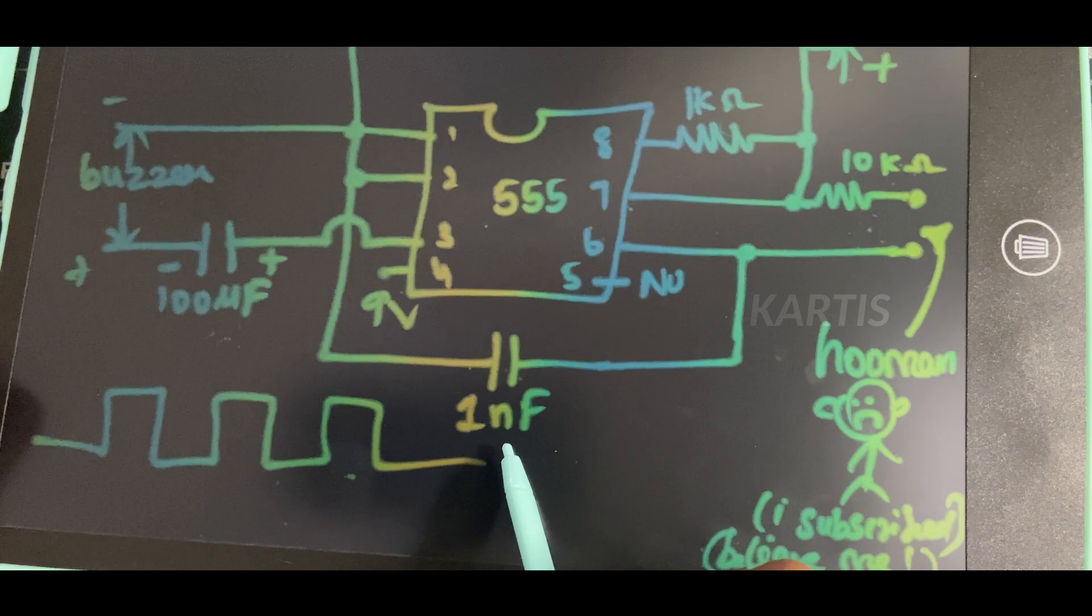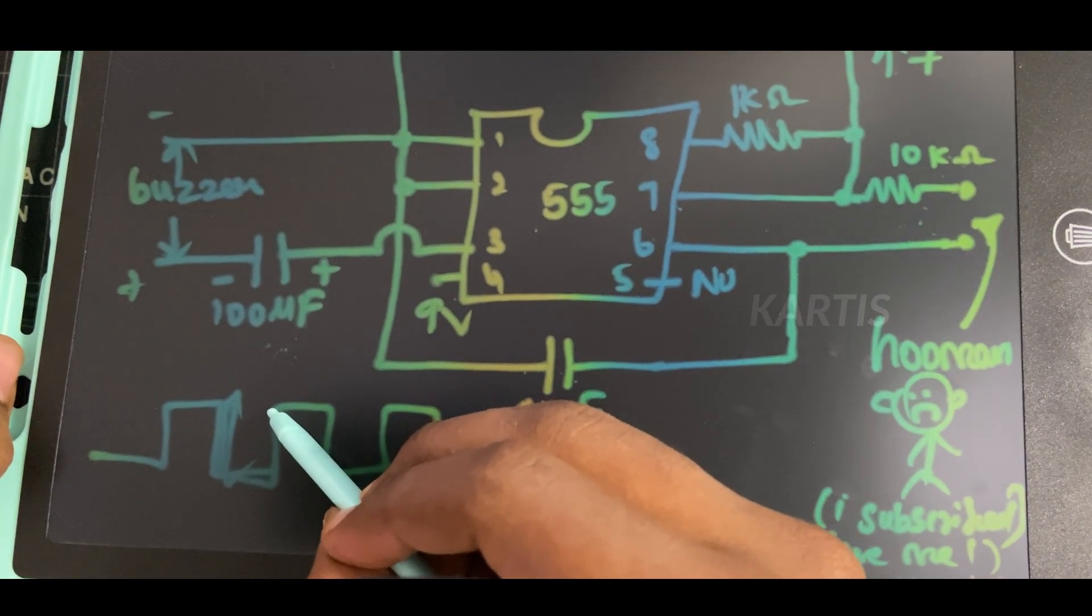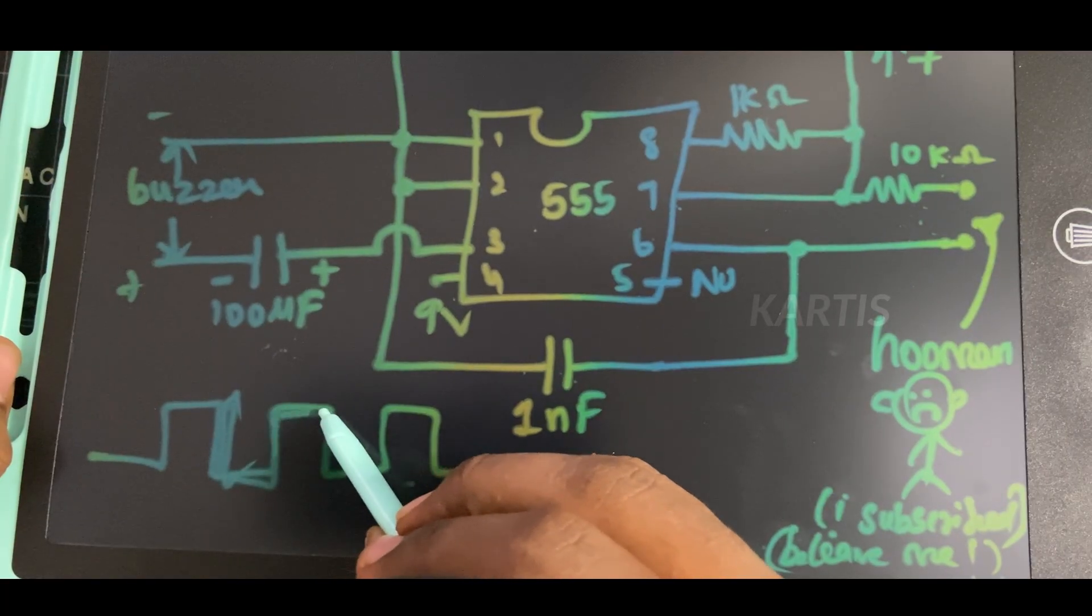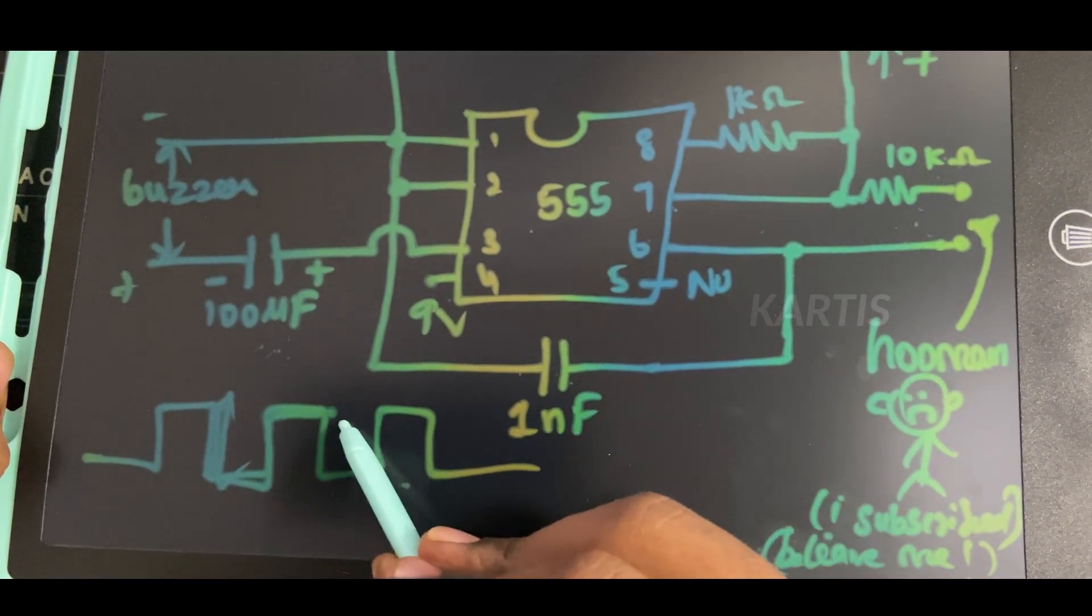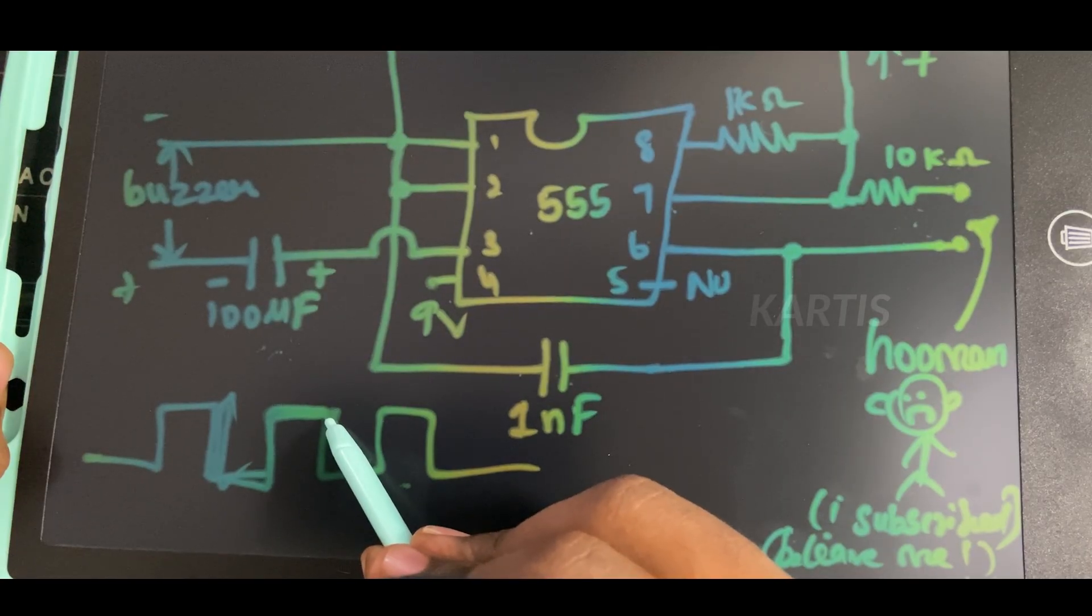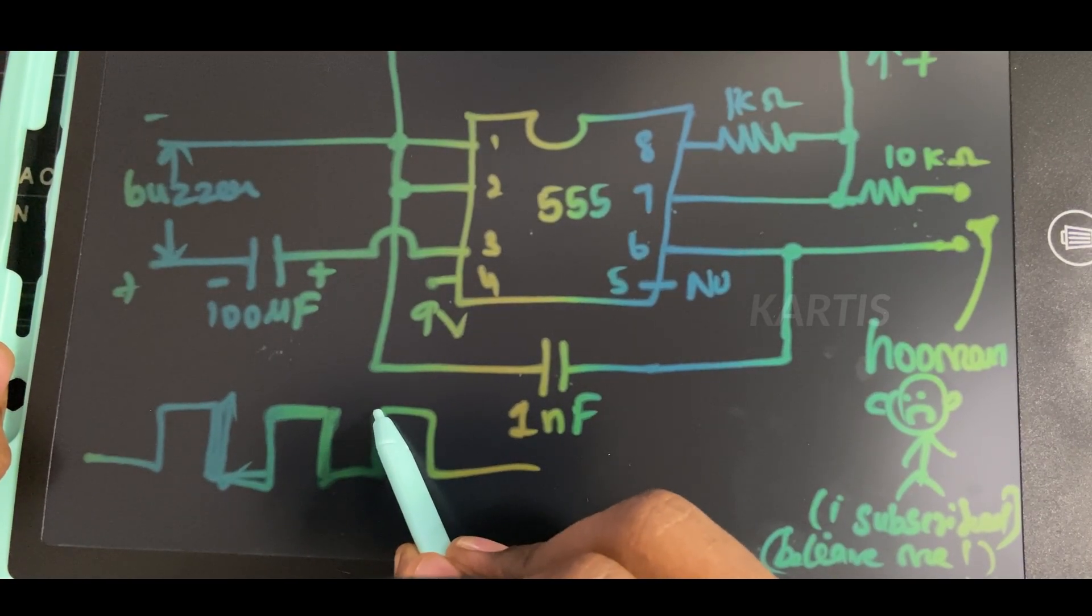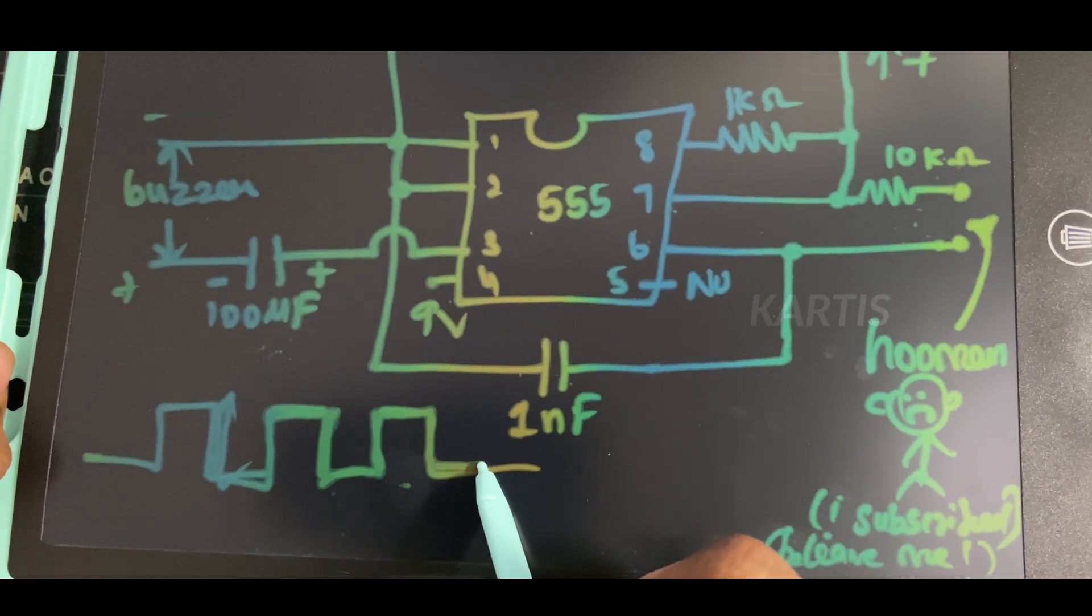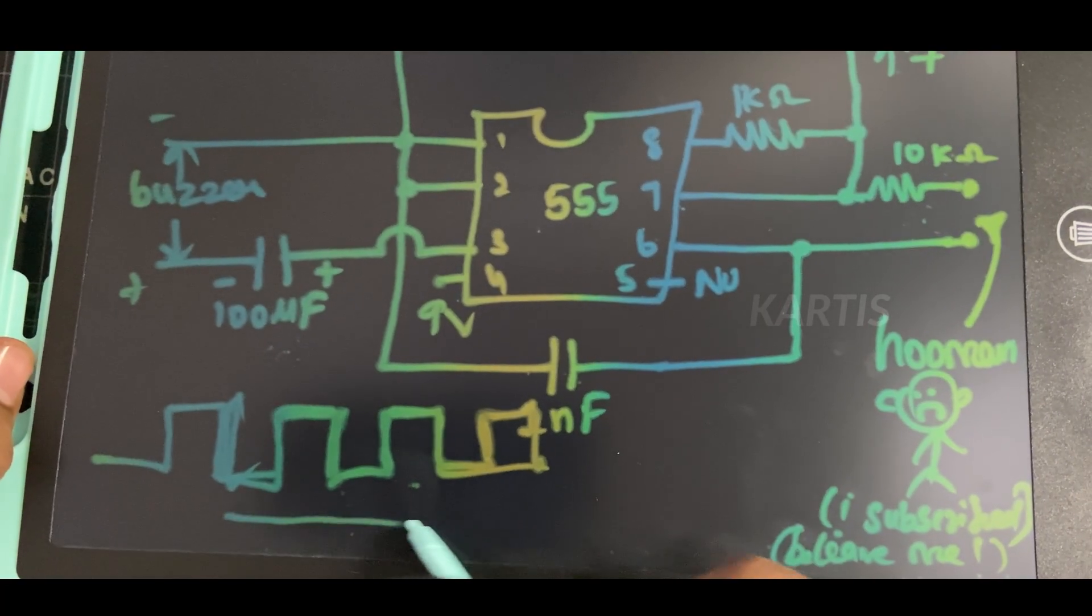If the capacitor is charged, the output will be high. Then, we go to off-state, which means no voltage. Then, we discharge it. The capacitor is charging and discharging continuously. The output alternates high and low. This continuous cycle keeps going.